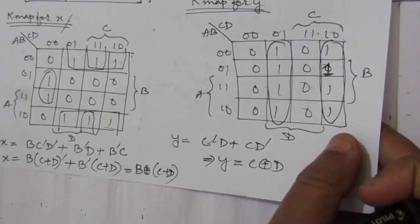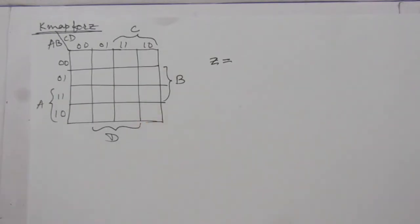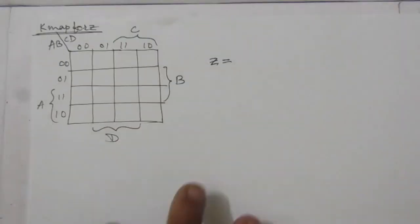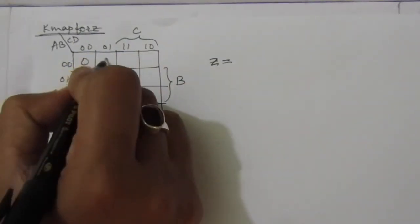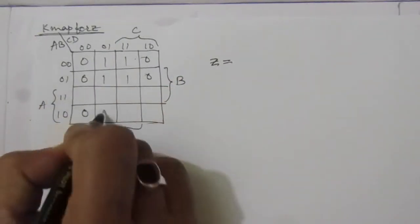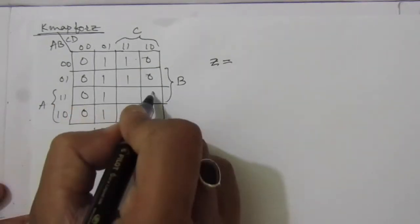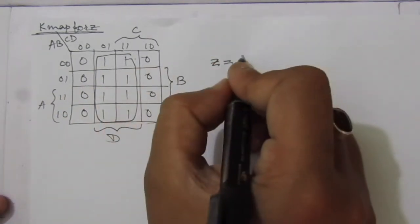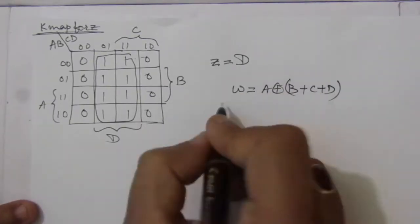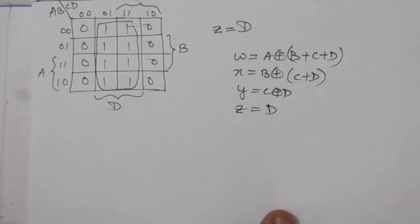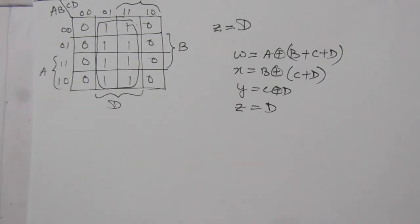For Z, we place the values into the KMap: 0, 1, 0, 1, 0, 1, 0, 1, 0, 1, 0, 1, 0, 1, 0, 1. There is only one term, so Z = D. We have now obtained all expressions for W, X, Y, and Z.